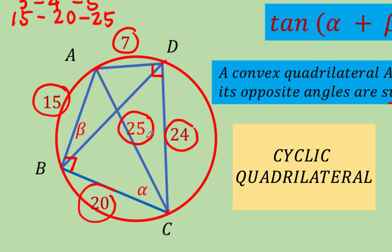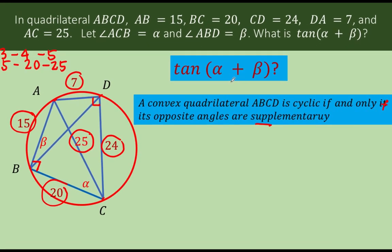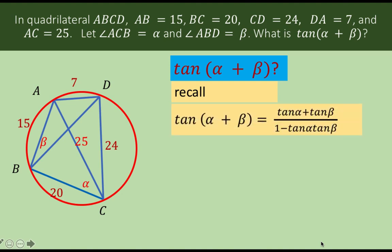Now, knowing that this quadrilateral is cyclic, let's go back to the main question. Find the value of the tangent of the sum of the angles alpha plus beta. Let's recall that the sum identity for the tangent function is tangent of alpha plus beta equals tangent alpha plus tangent beta all over 1 minus tangent alpha times tangent beta. We need to know the value of tangent alpha and tangent beta. From this diagram, we know that triangle ABC is a right triangle. We can easily find tangent of this angle alpha. Tangent is the ratio of the opposite side to the adjacent side. The opposite side is 15 units and the adjacent side is 20 units. Therefore, tangent of alpha is 15 over 20.